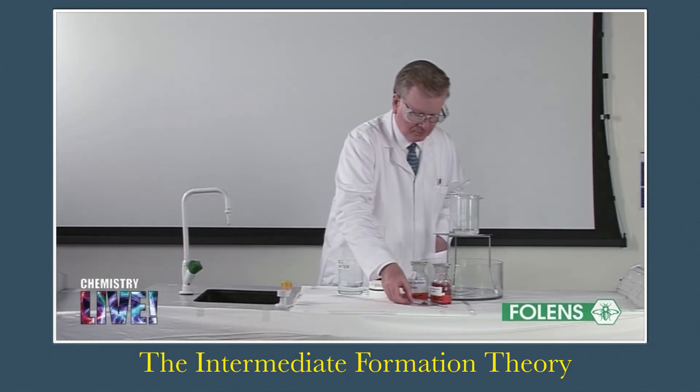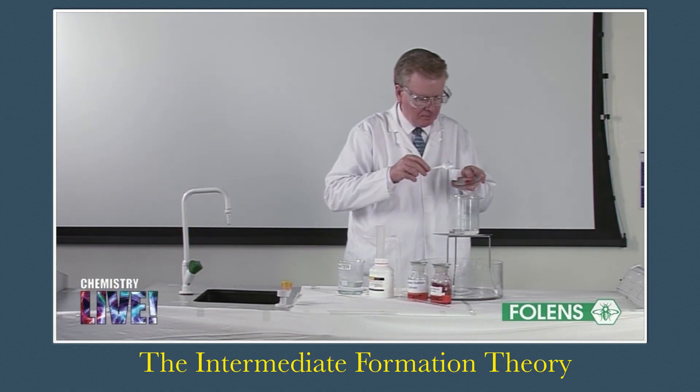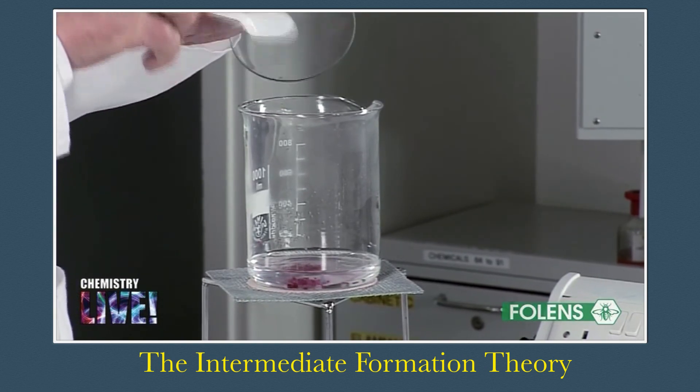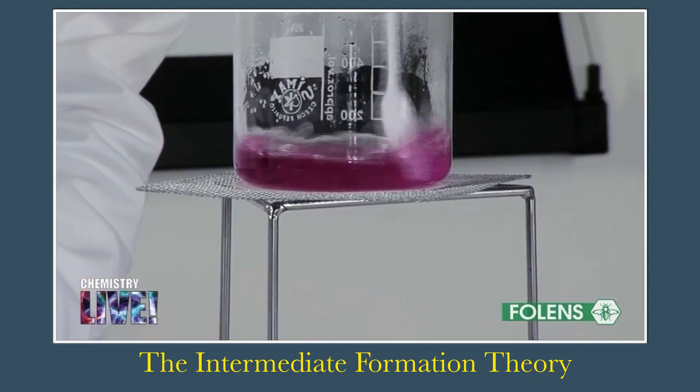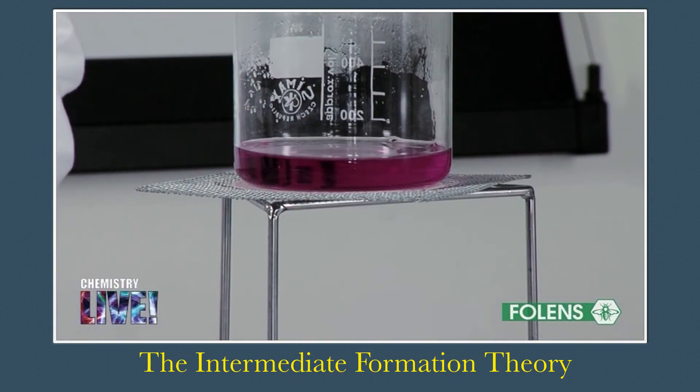0.6 grams of crystals of pink cobalt 2 nitrate, the catalyst, are added to the beaker at a temperature of about 70 degrees celsius which is placed on a tripod standing in a dish. Note that the solution is pink at the start of the experiment.